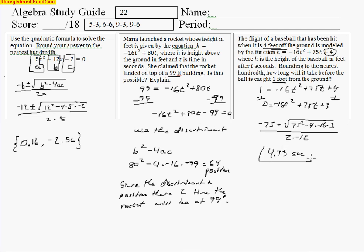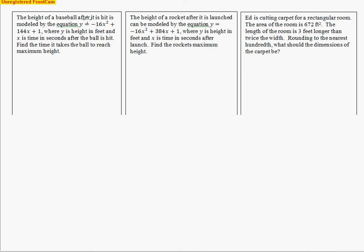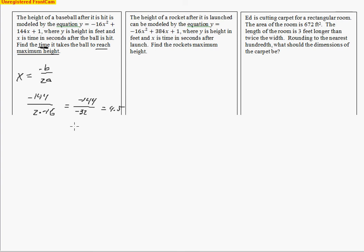The next problem: the height of a baseball after it's hit is modeled by this equation, where y is the height in feet and x is the time in seconds. We need to find the time it takes the ball to reach maximum height. That's just the axis of symmetry formula: x equals negative b over 2a. Taking the b term, negative 144, over 2 times negative 16 gives negative 144 over negative 32, which equals 4.5. So it takes 4.5 seconds for the baseball to reach its maximum height.